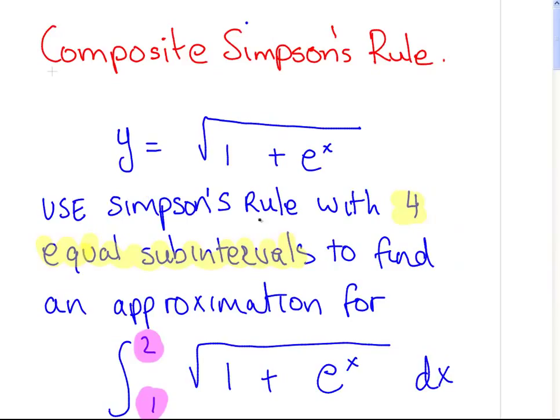Just working that out, the integral will work out to be 2.3645. So that is the Simpson's rule, 2.3645. So use Simpson's rule to find an approximation for that. So we found an approximation, 2.3645.